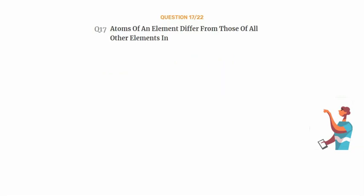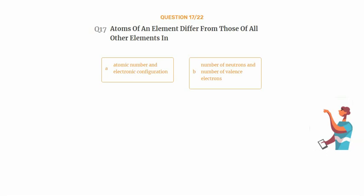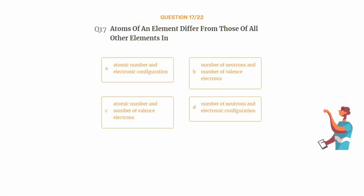Question number 17. Atoms of an element differ from those of all other elements in. Option A: Atomic number and electronic configuration. Option B: Number of neutrons and number of valence electrons. Option C: Atomic number and number of valence electrons. Option D: Number of neutrons and electronic configuration.